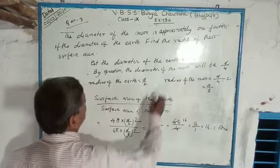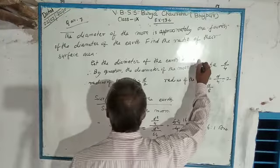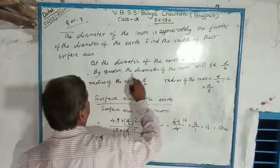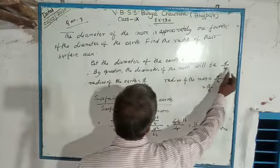The diameter of the Earth is d. The diameter of the moon will be d by 4.